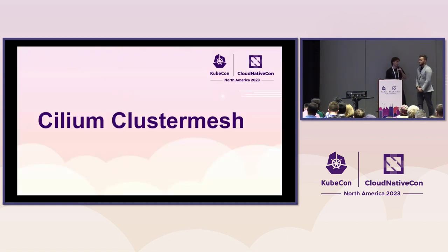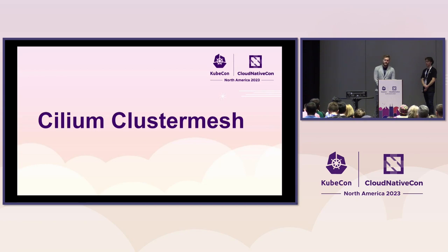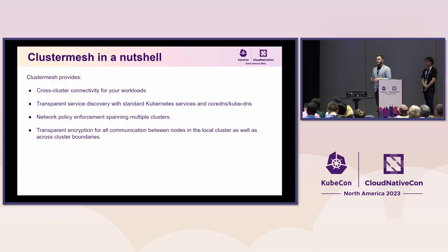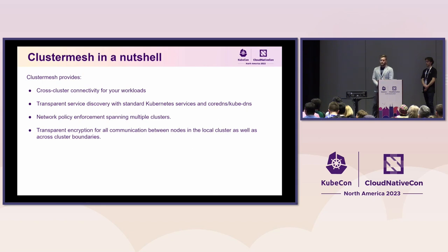We heard about problems with a single cluster. Now the question is: what else can you do if facing those issues? I'd like to talk about cluster mesh. If you're interested in higher scale, you might consider using cluster mesh to connect multiple clusters. Cluster mesh provides pod-to-pod connectivity between clusters, and on top of that, all the benefits of Cilium: network policy enforcement that works across clusters, transparent service discovery so you can share services between clusters, and transparent encryption if you're interested in that.